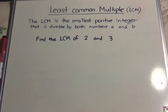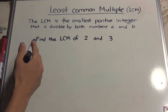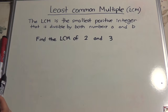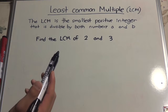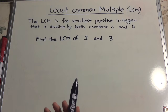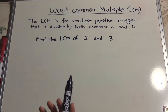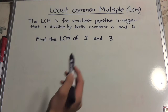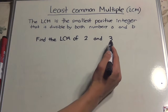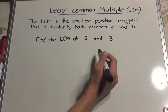As an example, if we were asked to find the LCM of 2 and 3, the smallest positive integer that is divisible by both 2 and 3 would be 6.